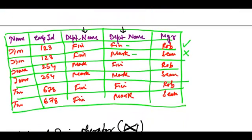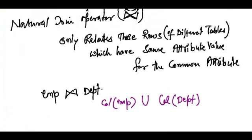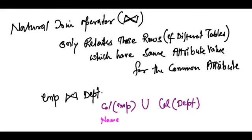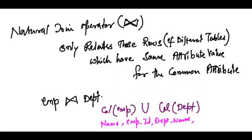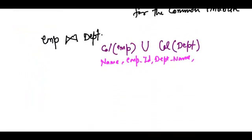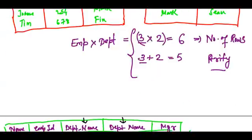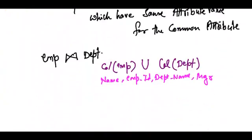How many columns would we have? We would have name, employee ID, department name, and manager. We have only 4 columns here as against 5 columns in a cross product.